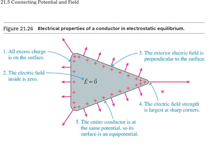At sharp corners there is the largest concentration of charges, so the electric field is strongest at corners. The field is zero inside, and any charge added to the object resides on the surface.